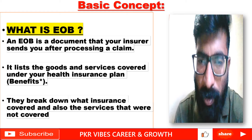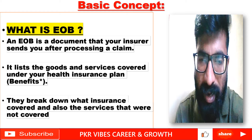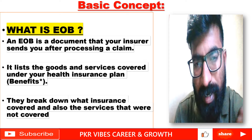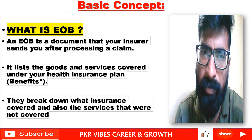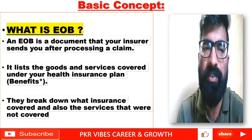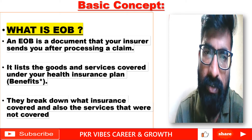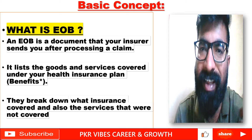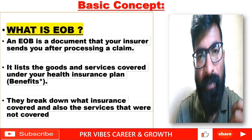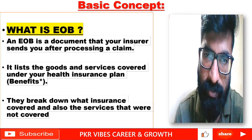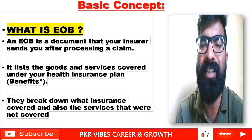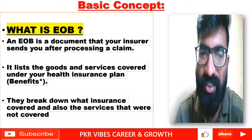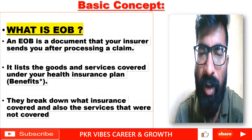Whenever a claim is processed, one number is generated by the insurance company — we call it the claim number. After processing, the claim might be directed towards payment or towards denial. So the claim might result in a payment to the doctor or a denial. Based on the EOB — Explanation of Benefits — we can understand whether a claim is denied or paid. EOB is the document that your insurance sends to your doctor or to you after processing a claim.